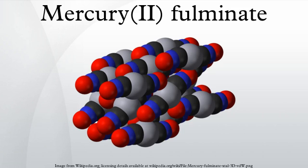Mercury fulminate, though its formula is identical to mercury cyanate, has a different atomic arrangement. The cyanate and fulminate anions are isomers.